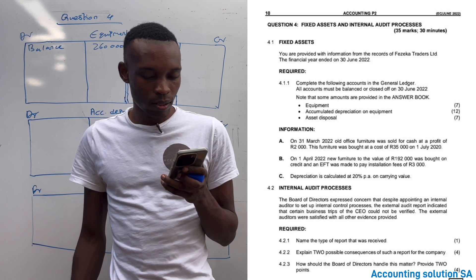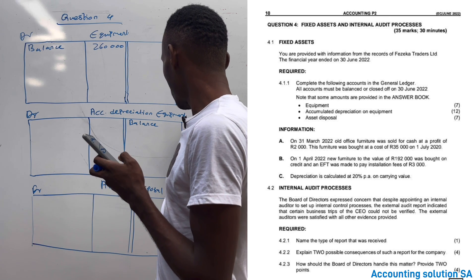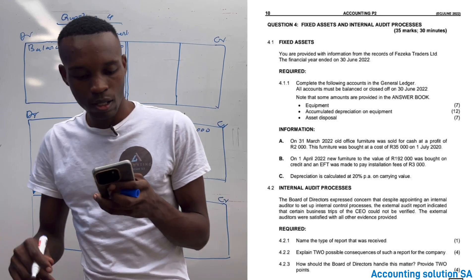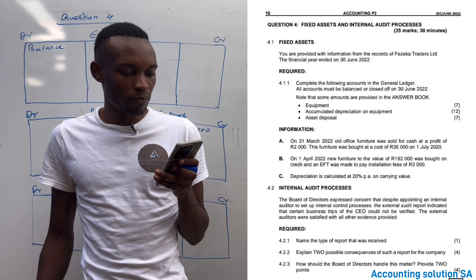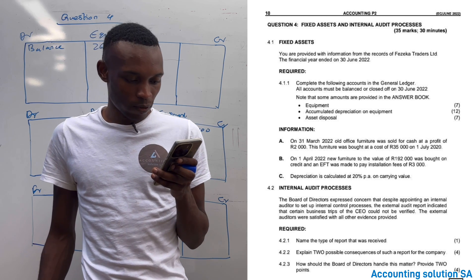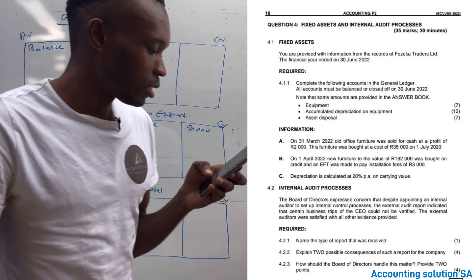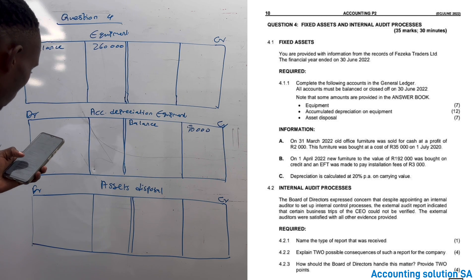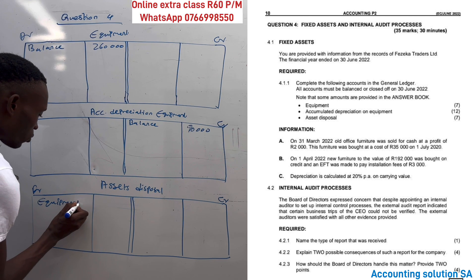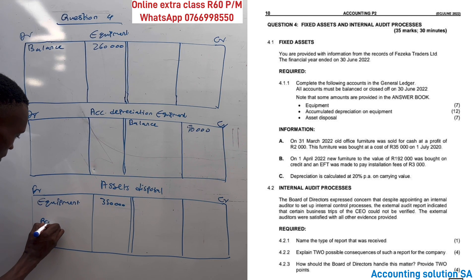Information number one: as you can see, some of the balances were already provided - here it was 90,000, it was provided as a balance. They said on 31 March 2022, old office furniture was sold for cash at a profit of 2,000, and this furniture was bought at a cost of 35,000 on 1 July. There was a disposal here, which means that asset disposal is going to have impact. Equipment of cost price of 35,000 was sold, and you know that if we had a profit, we record profit this side: profit on sales of assets.